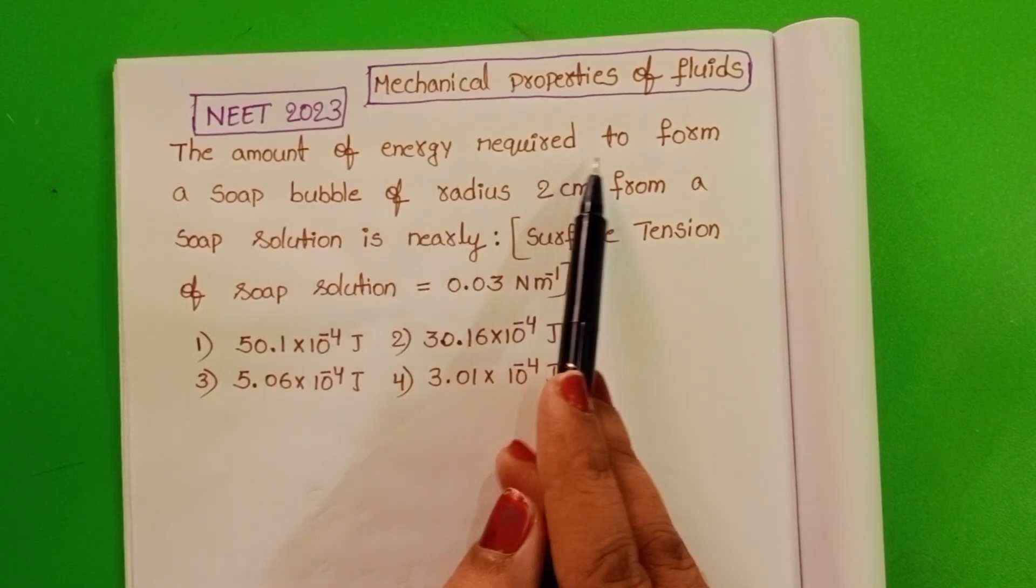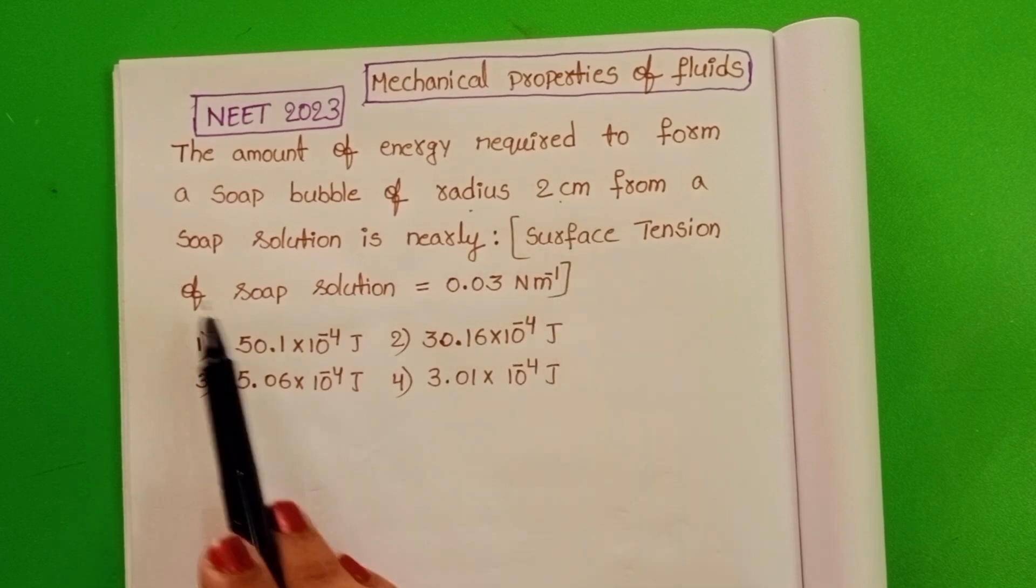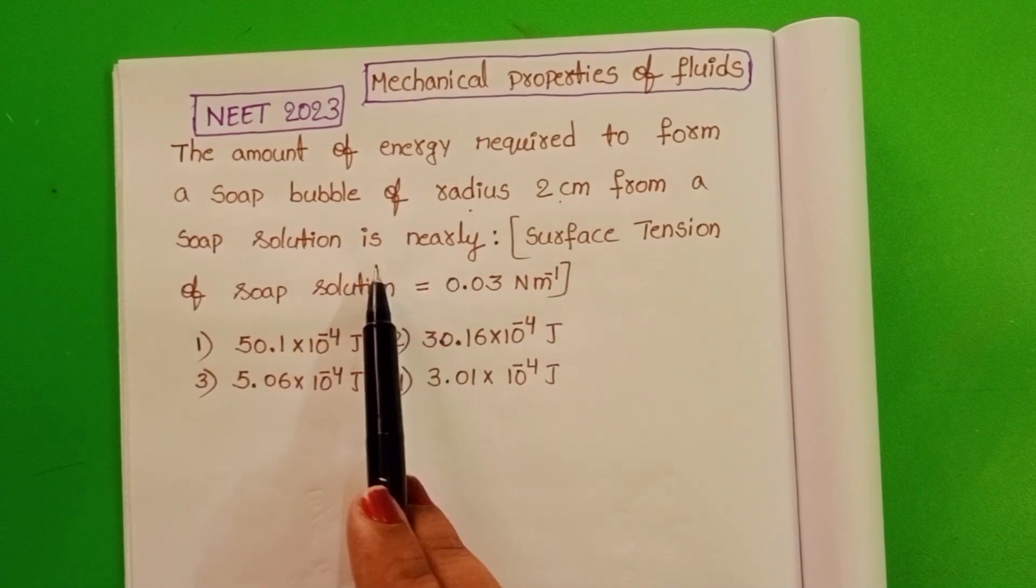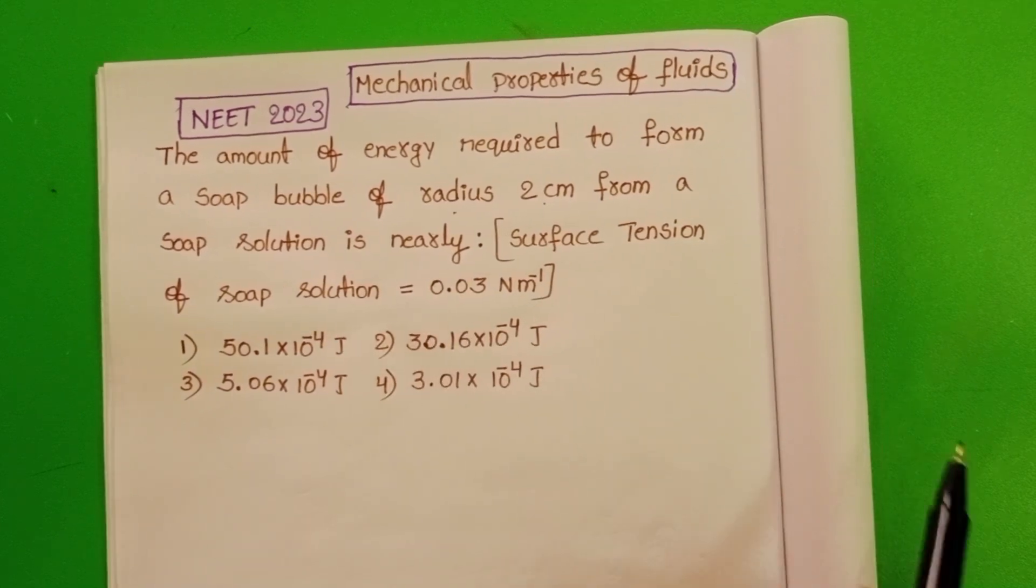The amount of energy required to form a soap bubble of radius 2 cm from a soap solution is nearly... We know surface tension of the soap bubble also.